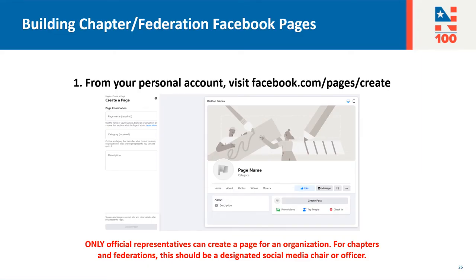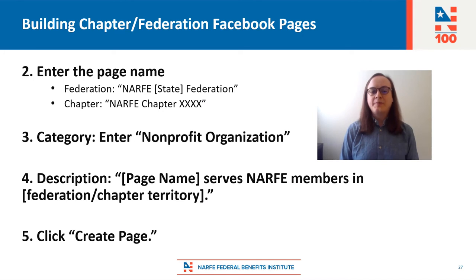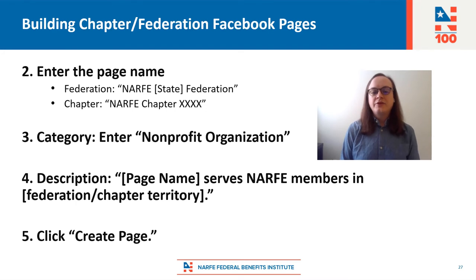Now we'll talk about building a chapter or federation page on Facebook. From your personal account, visit facebook.com/pages/create. I want to make a special note that only official representatives should create a page for an organization — for chapters and federations, this should be a designated social media chair or officer. On that page, enter your page name. Federations should follow the guidelines of NARF, your state, and federation. Chapters should follow the guidelines of NARF, chapter, and then your chapter number. Under category, enter nonprofit organization. Under description, include your page name with the sentence 'Serves NARF members in your own chapter or federation territory.' Click create page.